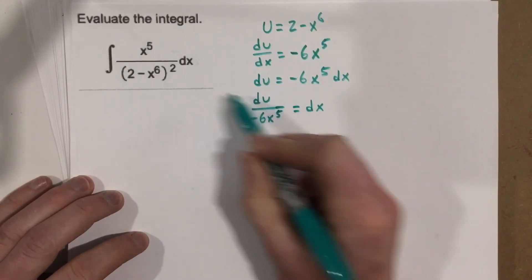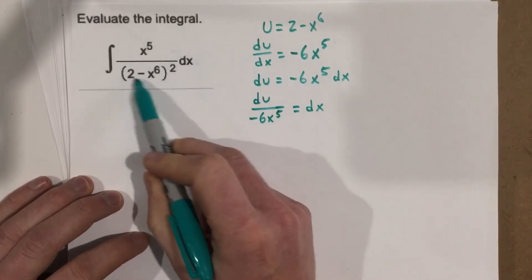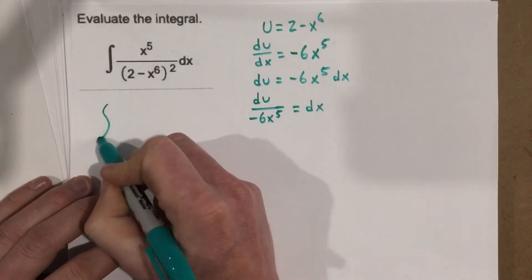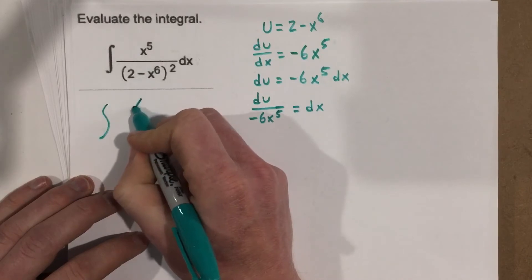Now we can take this and plug this in for dx, and we can also replace the 2 minus x to the 6th with u.